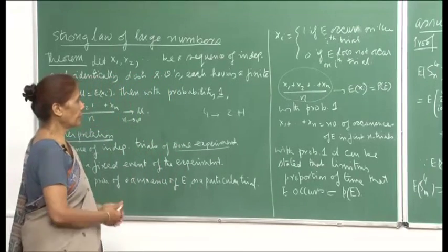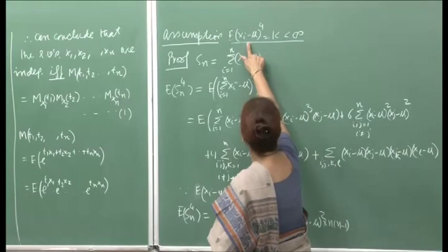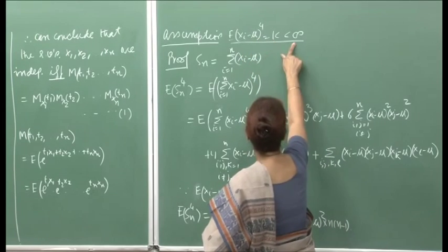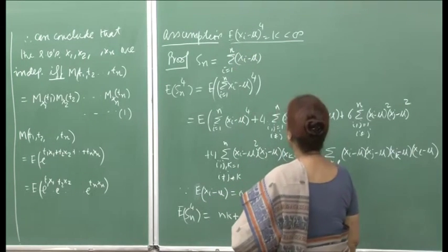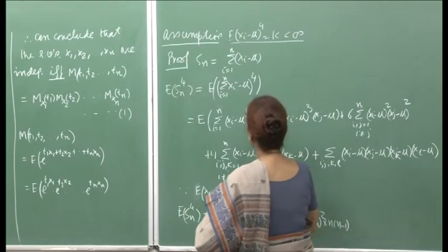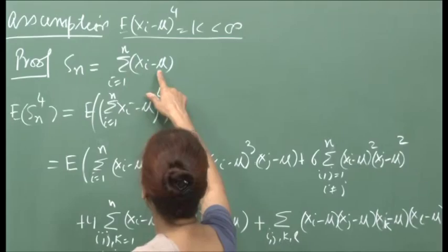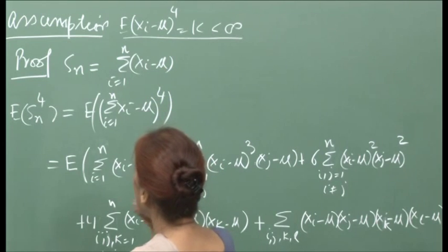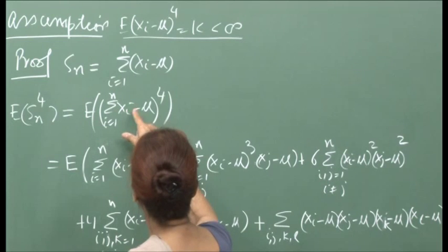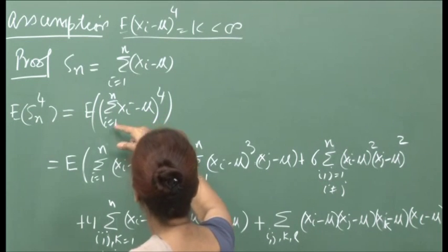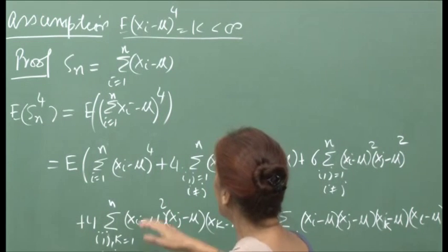Now let us prove the result. We assume that E[(x_i − μ)^4] = k < ∞, that is, the fourth moment about the mean is finite. Define S_n = Σ(x_i − μ) for i from 1 to n. We want to compute E[S_n^4], which means the expectation of (Σ(x_i − μ))^4 for i from 1 to n.